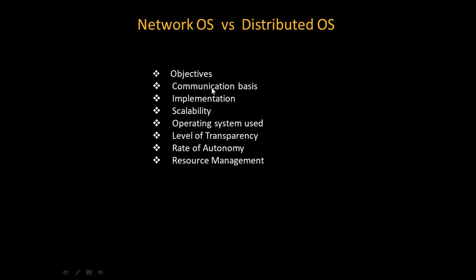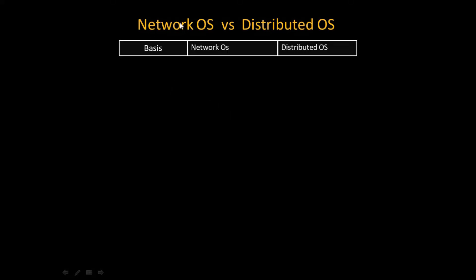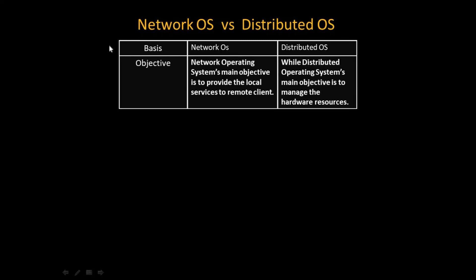The basics we will cover are: objective, communication, basics of implementation, scalability, operating system used, level of transparency, grade of autonomy, and resource management. Here we have our table — the first column has the basics, the second has network operating system, and the third has distributed operating system.